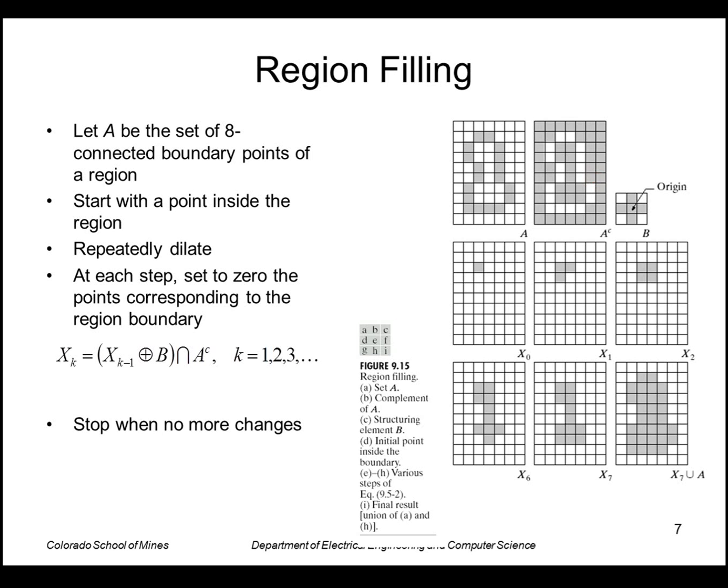At every step we don't want the dilated portion to cross the boundary. We intersect with the complement, which is the zeros where I have the boundary. We intersect the dilated portion with that set of zeros, and that ensures that the dilation does not cross the boundary.